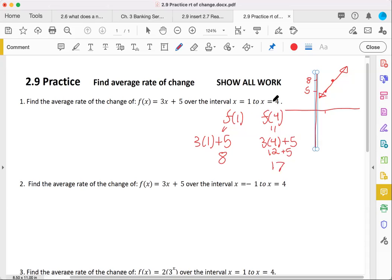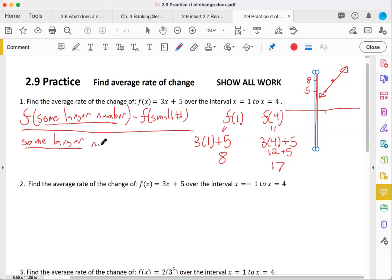So we know that for our rate of change, we're always taking f of some larger number minus f of a smaller number. That's usually how I approach this. And then we divide all of that by, said larger number would go here. And this should look like a slope type of equation. And then finally, we deduct that smaller number. So the input in particular is what we deduct.